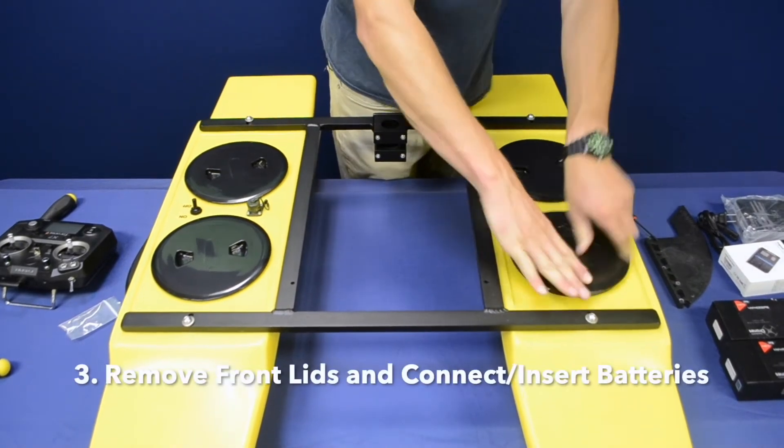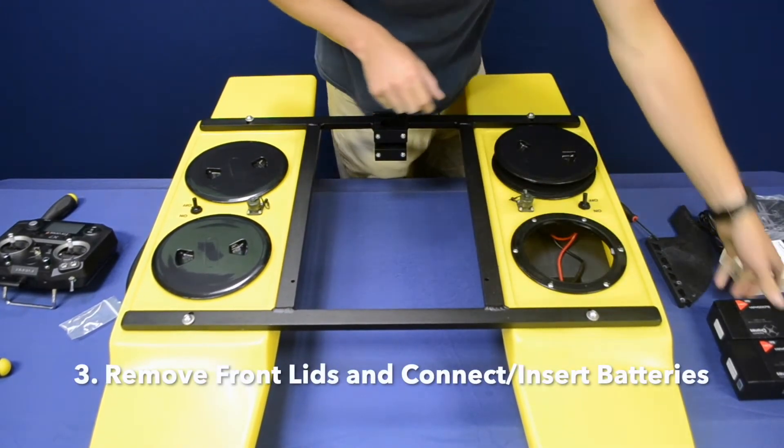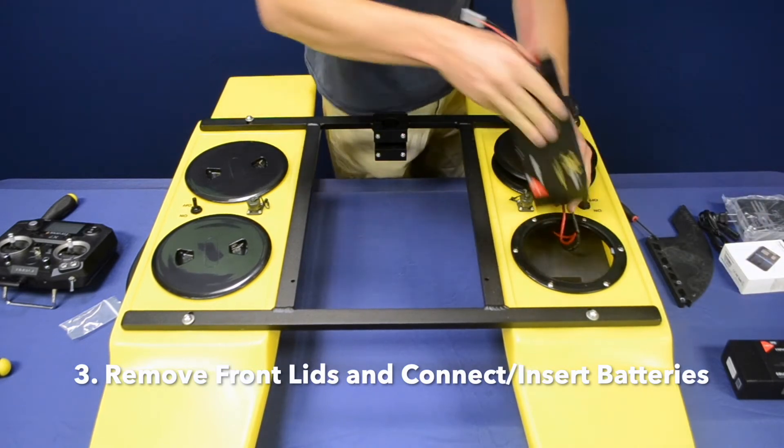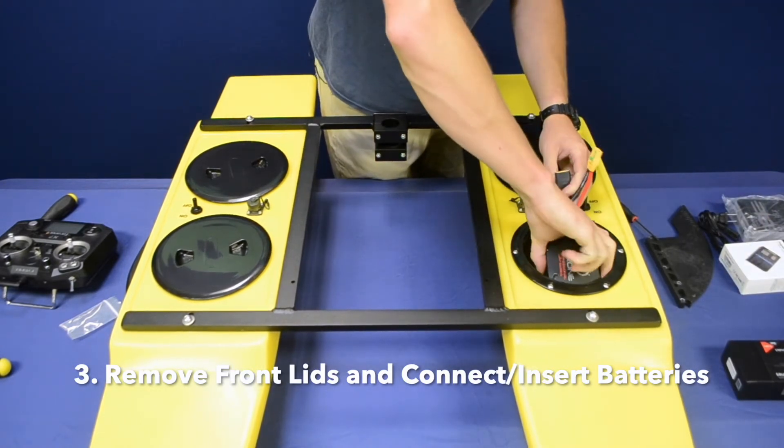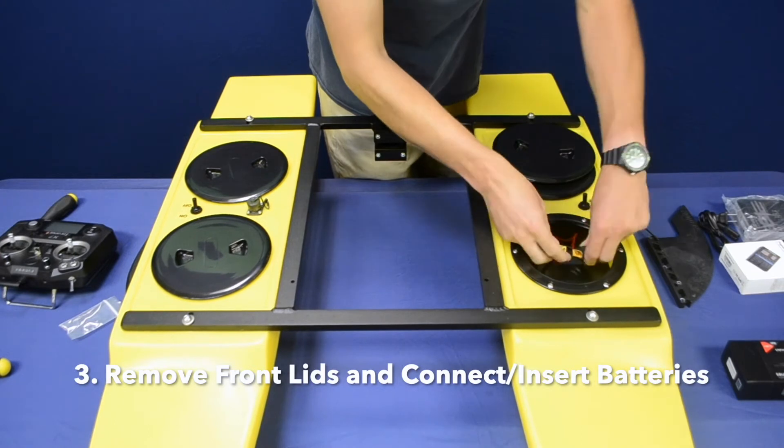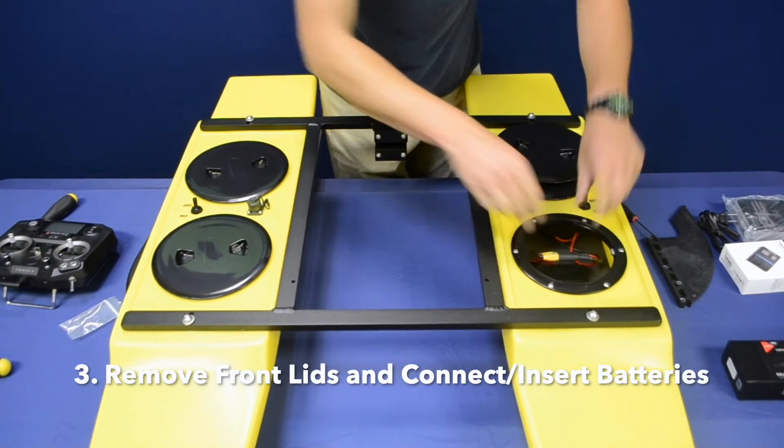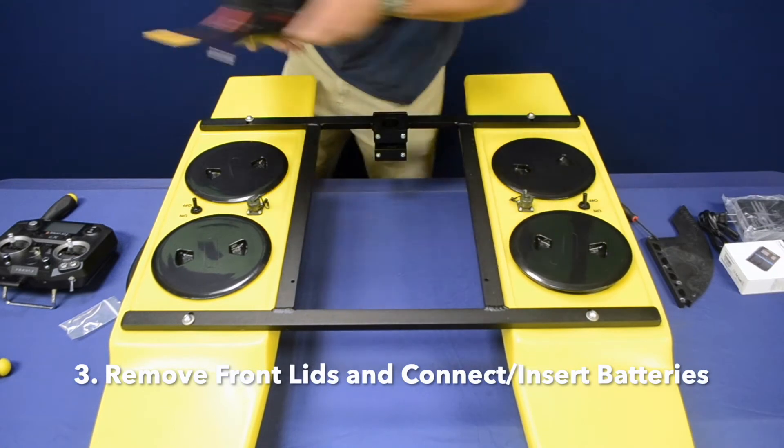To install the batteries, you'll open up the hatches by unscrewing them. Batteries have their slot cut in the foam and the Velcro on the bottom to secure them there and plug them in using an XT90 connector. The connector is keyed. It can only go in one way.